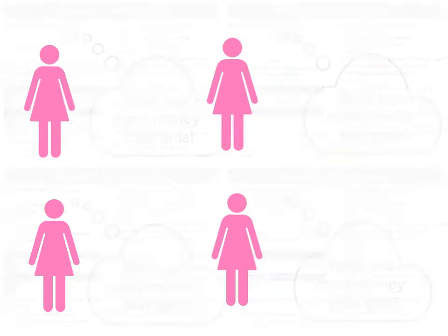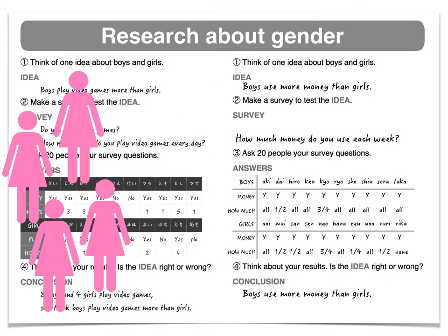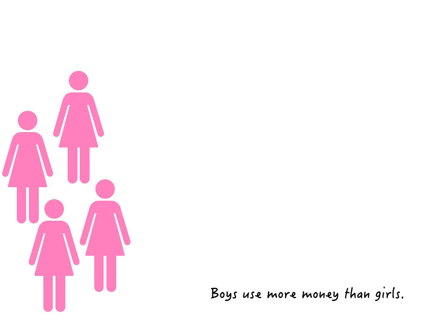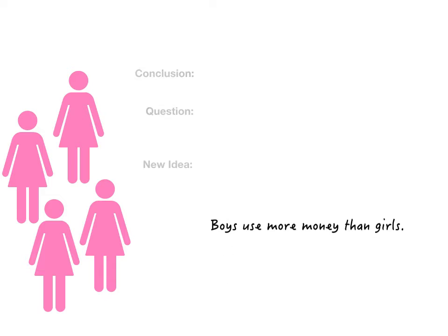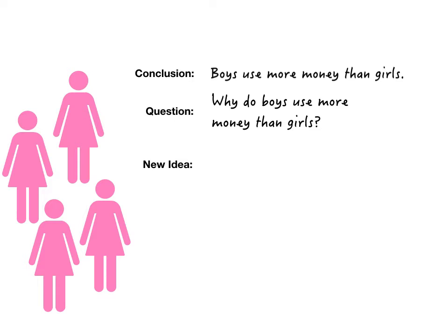Look at the conclusion. In this example, the conclusion is: boys use more money than girls. We will use this conclusion to make our new idea. First, we change the conclusion into a question: Why do boys use more money than girls?